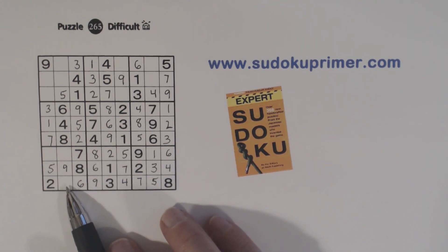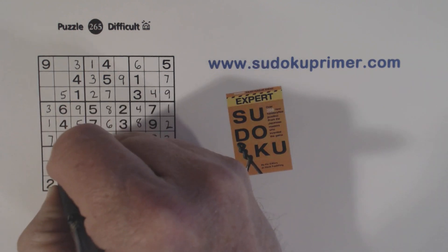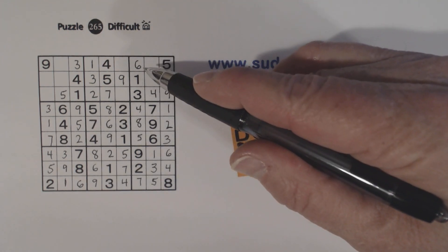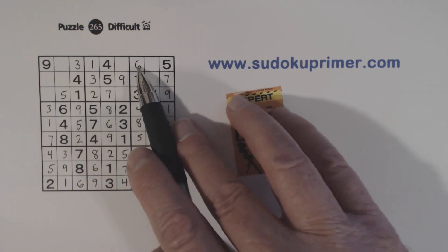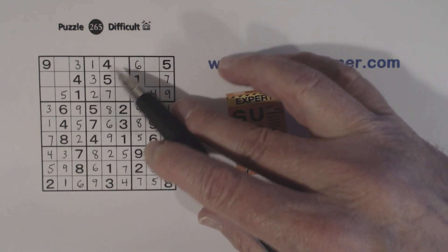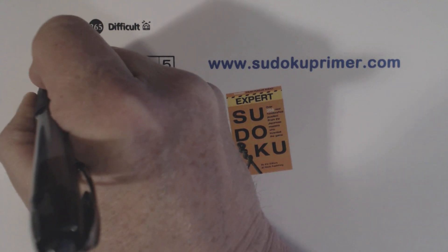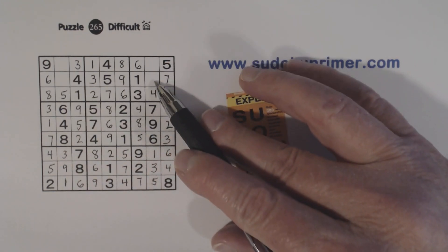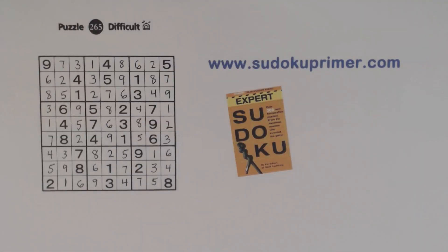Now we're only missing a nine in row eight so we can put that in. And we're missing a one there. So these are three and four — we can finish those. Let's look at row one — we're missing two, seven, and eight. These are two-seven twins. There's a two and seven there so that's an eight. So that is a six and that's an eight and that's a six right there. We have two and seven there — we still can't solve those. We have two and eight there we can solve. And that's a seven and that's a two. That's it.